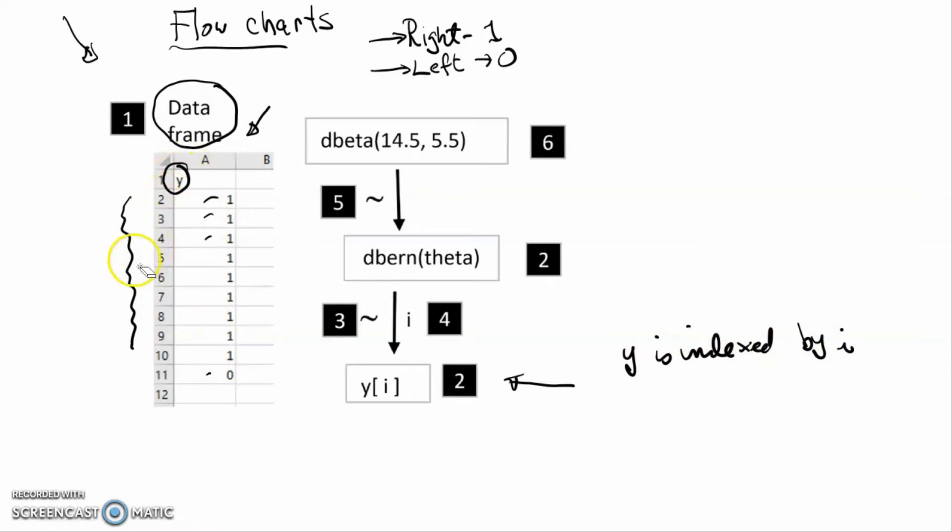Well, it means that we come back and look at our data frame. We've got these values of y, and there is no explicit definition of i.